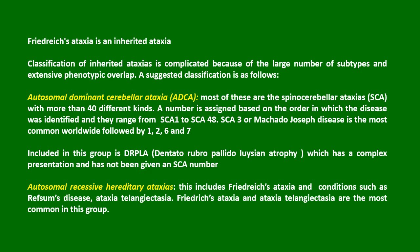SCA3, or Machado-Joseph disease, is the most common worldwide, followed by SCA1, 2, 6, and 7. Also included in this group is DRPLA, or Dentato-Rubro-Pallido-Luysian Atrophy, which has a complex presentation and has not been given an SCA number.